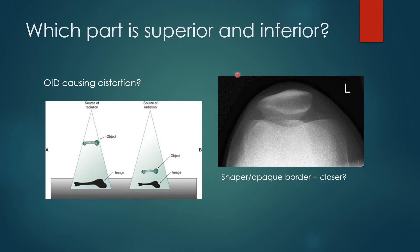I used to think this border density difference was due to distortion, where the cortical edge closer to the cassette would be magnified less and thus appear more sharp or more white. However, this didn't exactly hold up if I positioned the patient prone — because if the cassette is resting on the thigh the superior border will be sharper, but if the cassette is resting on the tibia then the inferior border will be sharper. There had to be something a bit more consistent in defining these edges.